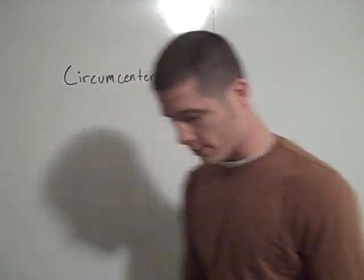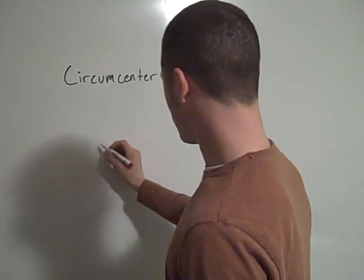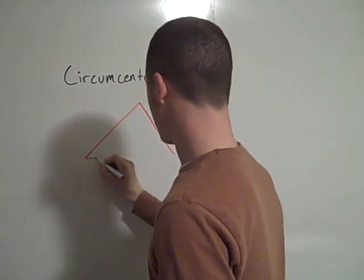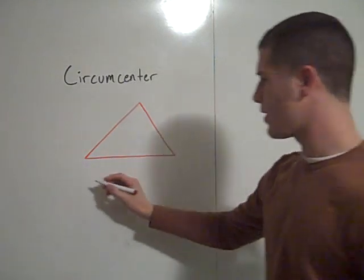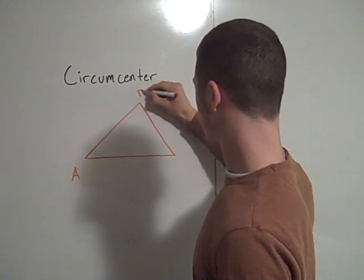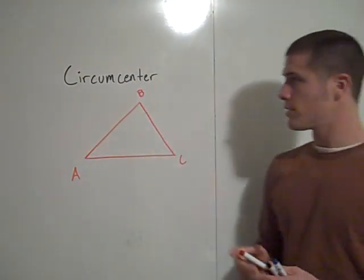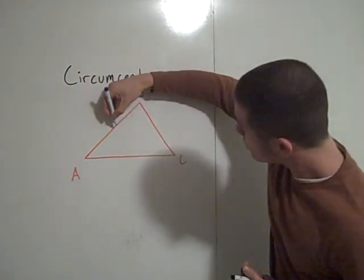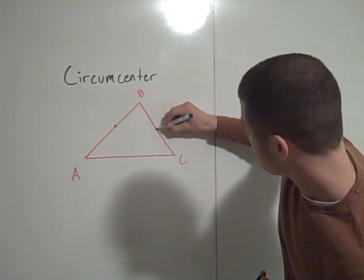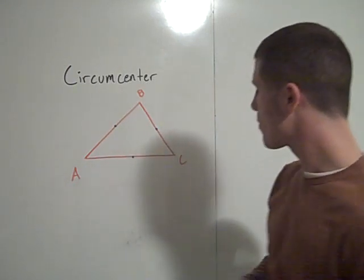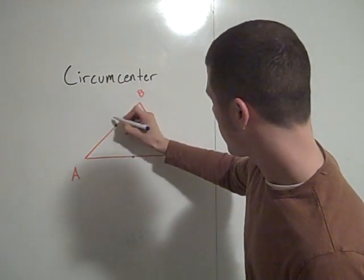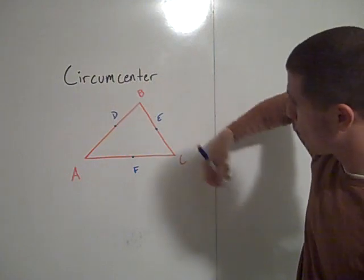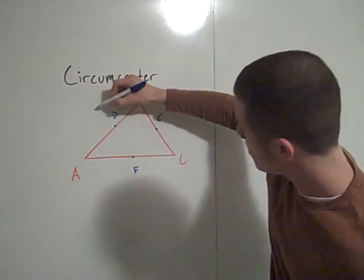First, let's talk about the circumcenter. If I have some triangle — I'll call this triangle ABC — the circumcenter is the point of concurrency of the perpendicular bisectors of each side of the triangle. First, you have to find the midpoints for each side, and I'll call the midpoints D, E, and F. Then you construct the perpendicular bisector — the perpendicular line that goes through the midpoints of each side.